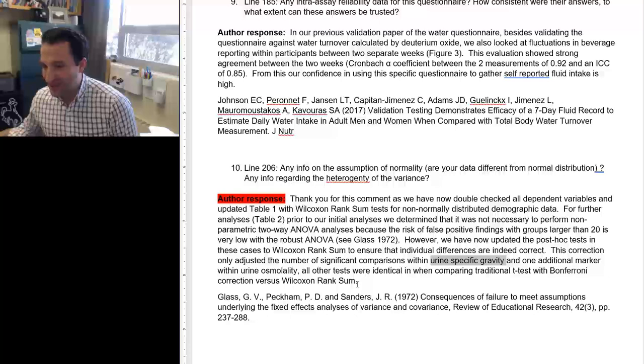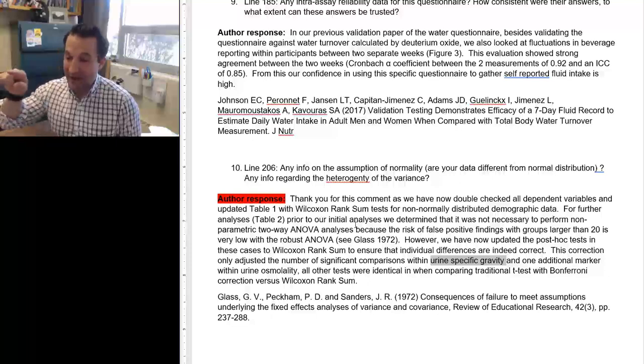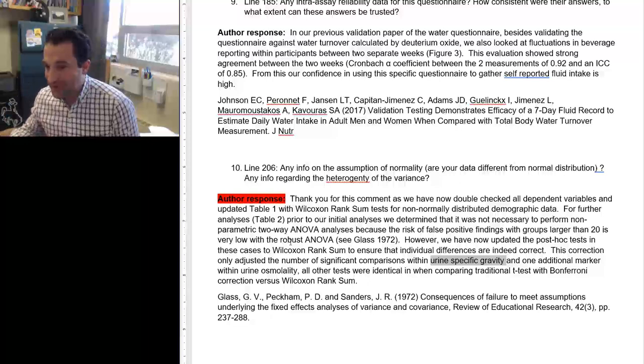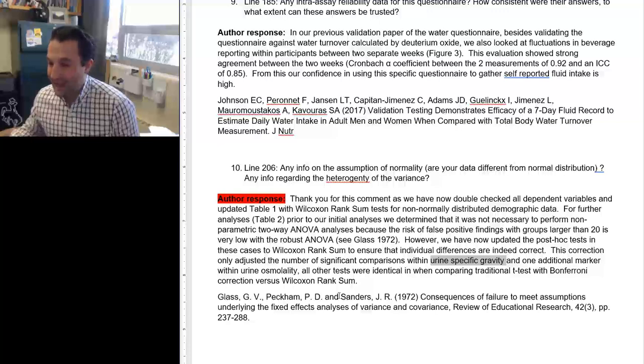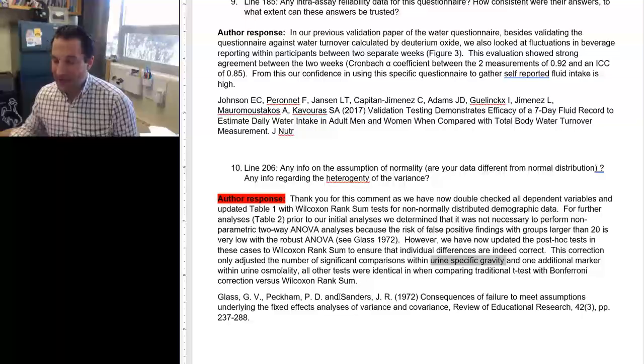All other tests were identical. And when comparing traditional t-tests with Bonferroni correction versus Wilcoxon rank sum. No difference. This took me over one day to do. I had to rerun everything. I had to update all of my tables to identify which ones were normal and which ones were. More than one day to respond to this single comment. But guess what? After I sent these response reviewer comments in, it got accepted. It was worth it. It took a whole day to do that. Even though it didn't change the outcome of the paper, it was worth it.